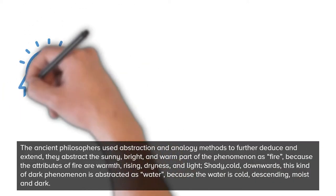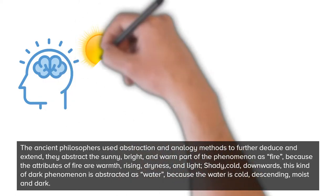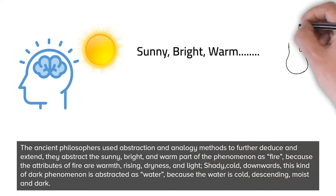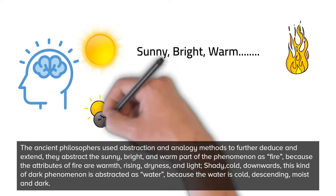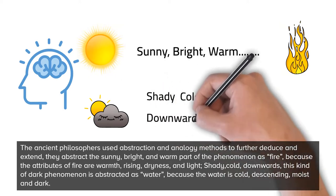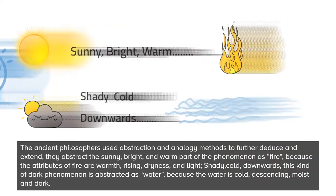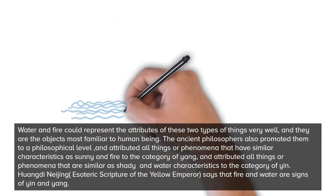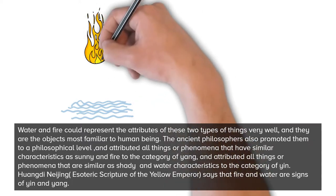The ancient philosophers used abstraction and analogy methods to further deduce and extend these observations. They abstracted the sunny, bright, and warm part of the phenomenon as fire, because the attributes of fire are warmth, rising, dryness, and light. The shady, cold, downward, dark phenomenon was abstracted as water, because water is cold, descending, moist, and dark. Water and fire could represent the attributes of these two types of things very well, and they are the objects most familiar to human beings.